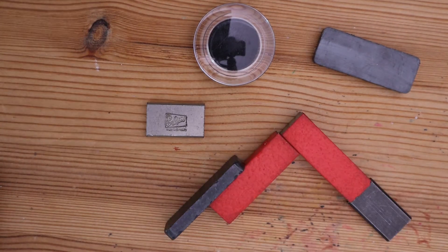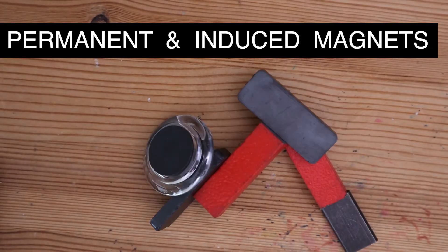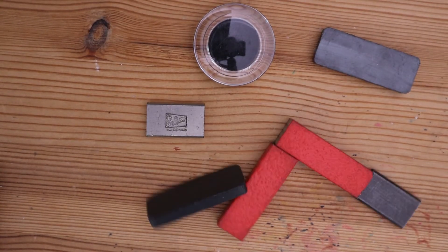There are two types of magnets: permanent magnets and induced magnets. Let's figure out the difference between a permanent magnet and an induced magnet using experiments.